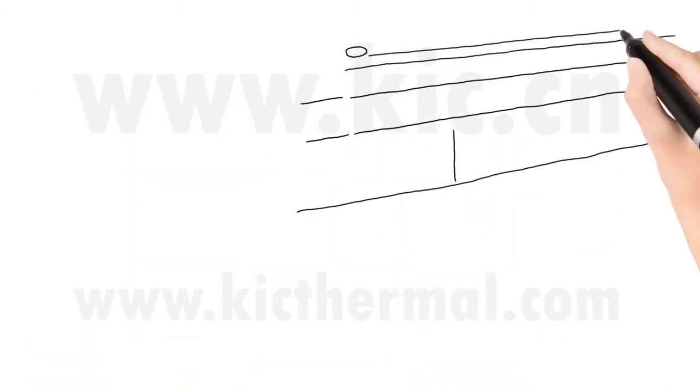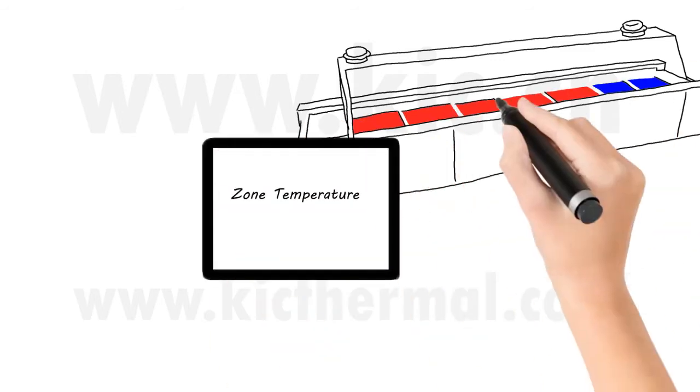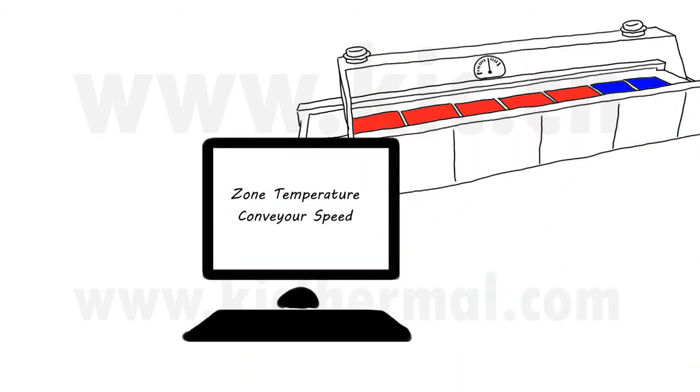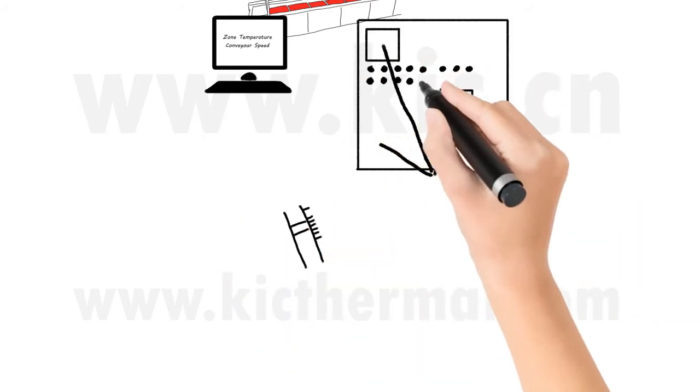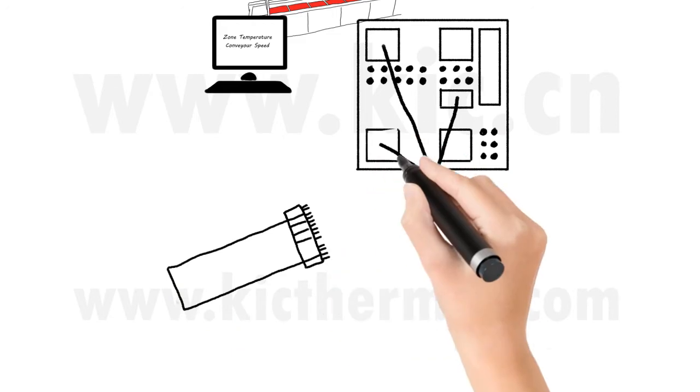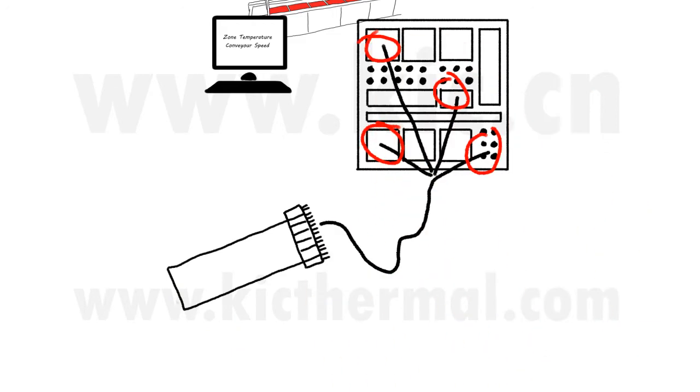A. We enter information on zone temperatures and conveyor speed into the computer. B. We run a manual profile with thermocouples attached to the PCB or the components of particular interest.